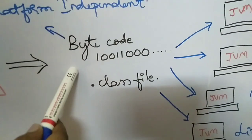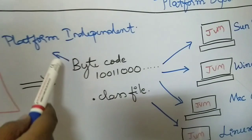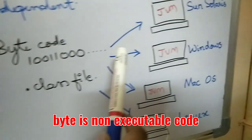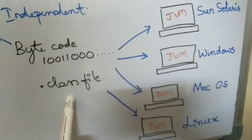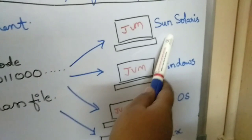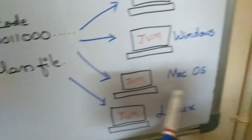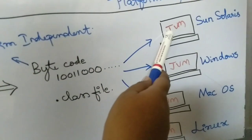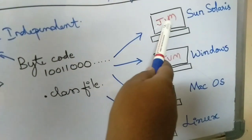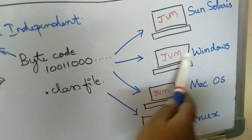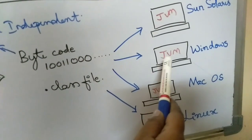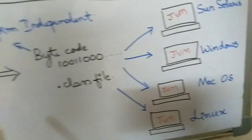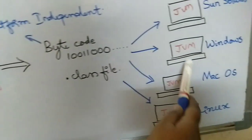The dot-class file contains the bytecode, and this bytecode is what makes Java platform independent. This bytecode can execute on a Sun Solaris machine, Windows machine, Mac machine, or Linux machine, provided there is a JVM specific to each platform installed. That is why we say the JVM is platform dependent, whereas the Java program itself is platform independent.